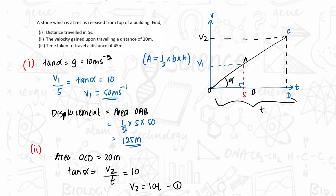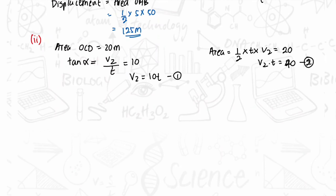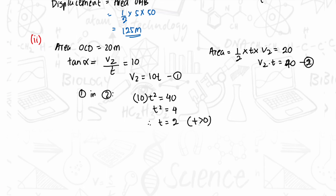Using the area: half × T × V2 = 20, so V2·T = 40 — that is the second equation. Substituting the first equation into the second: 10T² = 40, T² = 4, so T = 2 seconds (since T is a positive value).